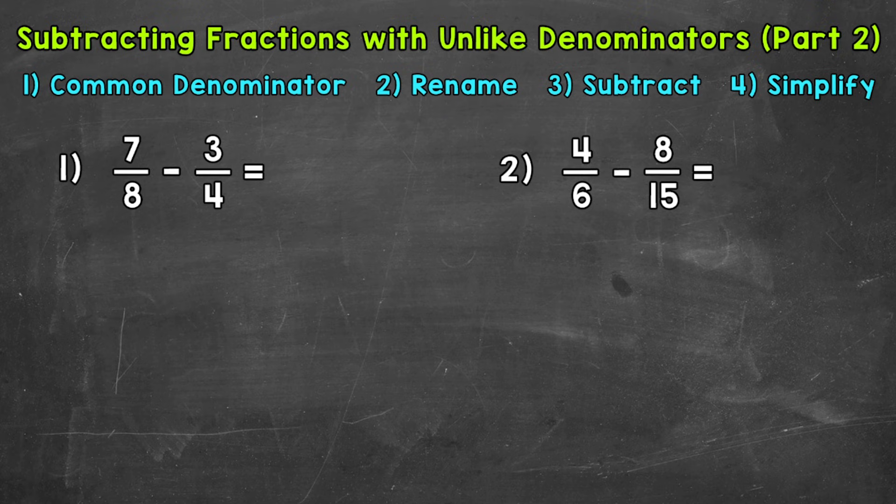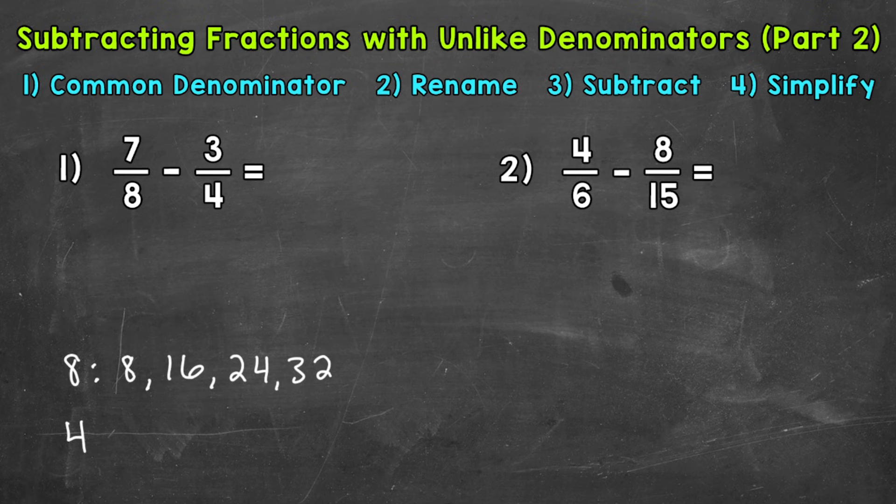We'll start with eight. So my suggestion would be write out four or five for each, look to see if you have any common multiples, specifically the least common multiple. If not, you can continue your lists until you find the least common multiple. So 8, 16, 24, 32. Let's do four. So 4, 8. And we don't need to continue because we see that we have a common multiple and specifically a least common multiple of 8 between 8 and 4.